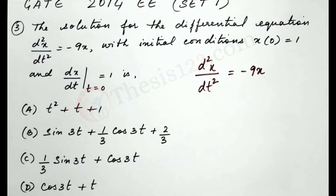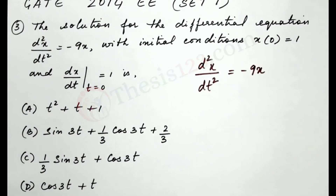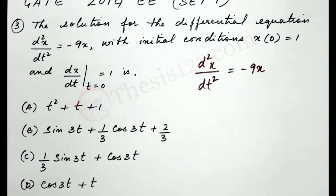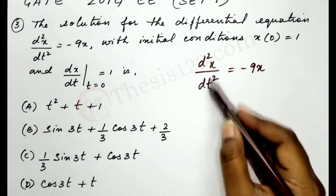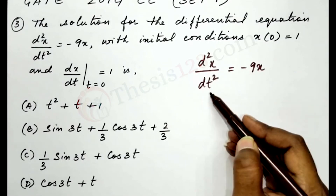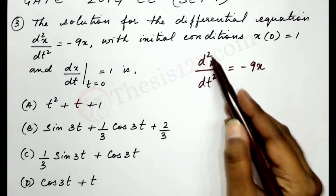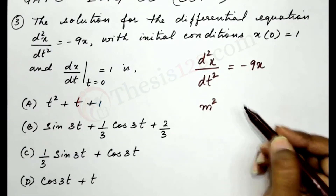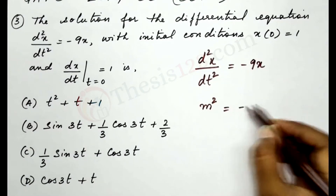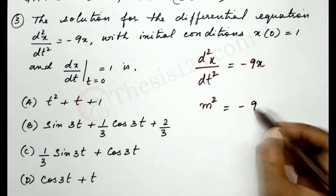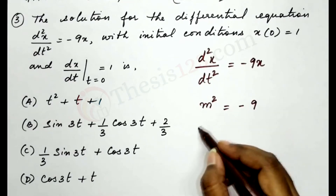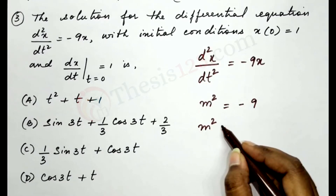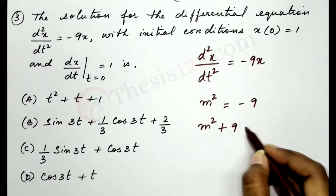In order to find the solution, the first step is to write the auxiliary equation. We can write dx/dt as m, so d²x/dt² is written as m². This gives us m² = -9. Bringing everything to one side, we write this as m² + 9 = 0.